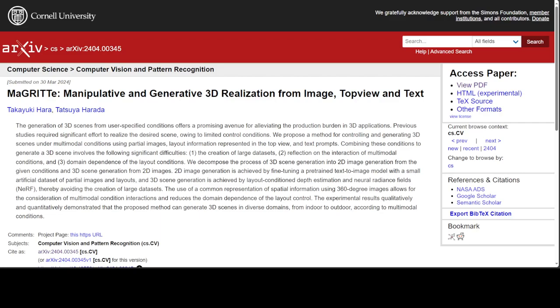This is due to the fact that each condition has its own advantages and disadvantages. For example, when partial images are given, it is possible to present a detailed appearance. However, it is difficult to create information outside the image. When a layout is given, it is possible to accurately describe object alignment but not to specify a detailed appearance. When text is given as a condition, it is suitable for specifying overall context, but it is difficult to determine the exact shape and appearance of the object.